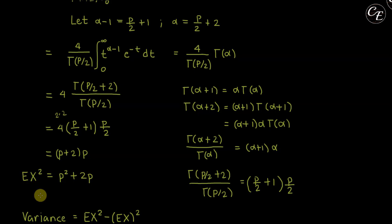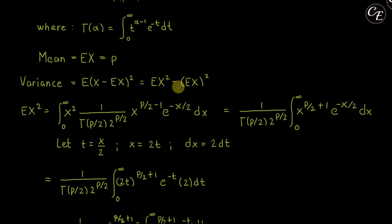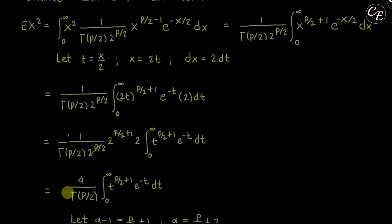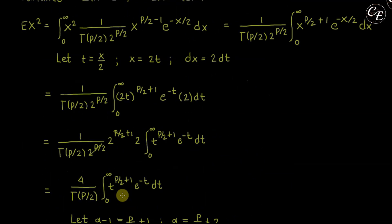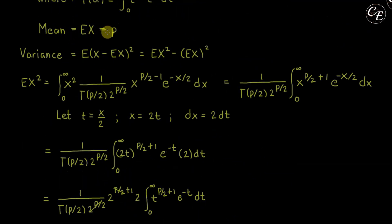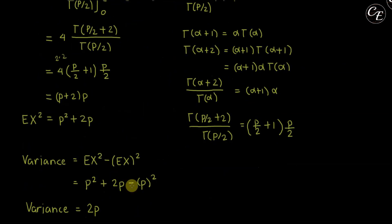Now we are ready to compute variance. Variance = E[X²] − (E[X])² = (p² + 2p) − p² = 2p. So the variance of the chi-squared distribution is 2p.